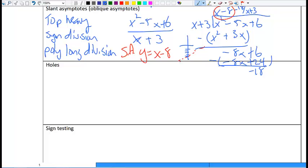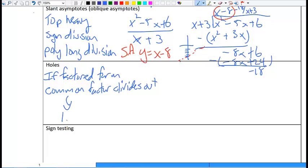That brings us to holes. A hole is if I have something in factored form, if in factored form, and a common factor divides out. The thing that divided out is where we find the hole. So this common factor is our hole.